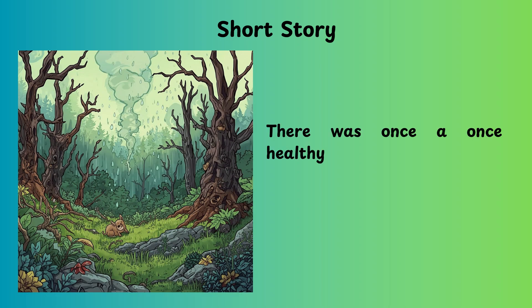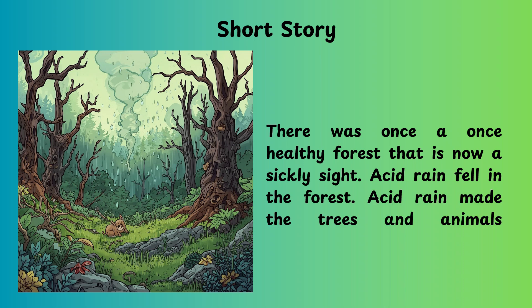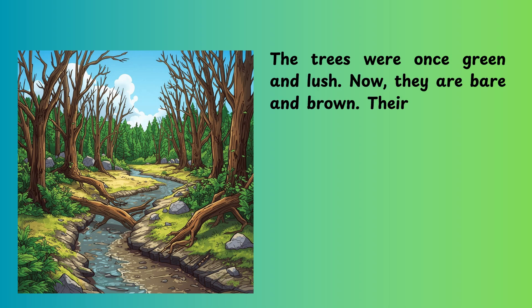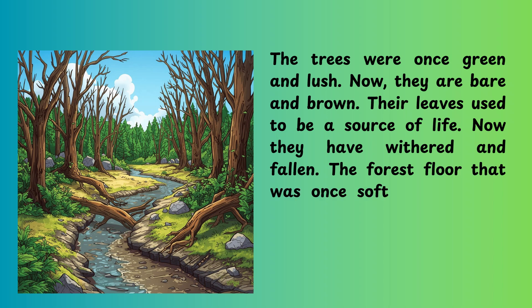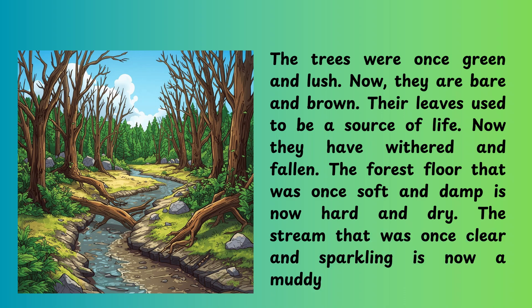There was once a healthy forest that is now a sickly site. Acid rain fell in the forest. Acid rain made the trees and animals unhealthy. The trees were once green and lush. Now they are bare and brown. Their leaves used to be a source of life, but now they have withered and fallen. The forest floor that was once soft and damp is now hard and dry. The stream that was once clear and sparkling is now muddy.